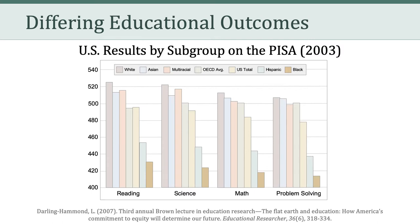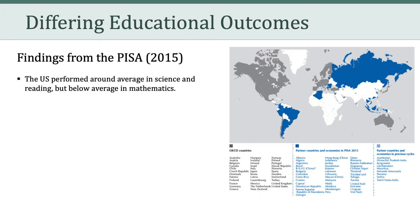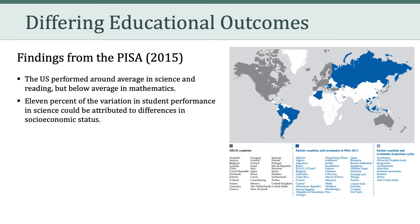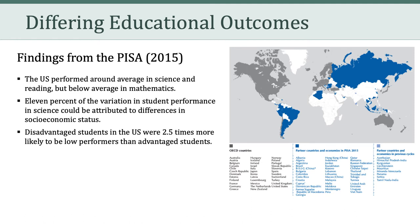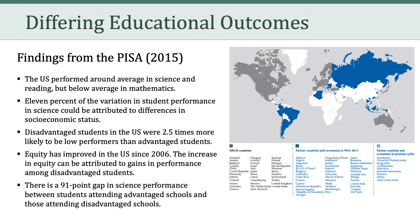The data in the Darling-Hammond article was a bit dated, so I wanted to share some of the findings from the 2015 PISA, which states that the U.S. performed around average in science and reading, but below average in mathematics. 11% of the variation in student performance in science could be attributed to differences in socioeconomic status. Disadvantaged students in the U.S. were two and a half times more likely to be low performers than advantaged students. There was a finding that equity has improved in the U.S. since 2006, attributable to gains among disadvantaged students. However, there is a 91-point gap in science performance between students attending advantaged schools and those attending disadvantaged schools. So again, when we focus on different subgroups within the U.S., we have differing educational outcomes.